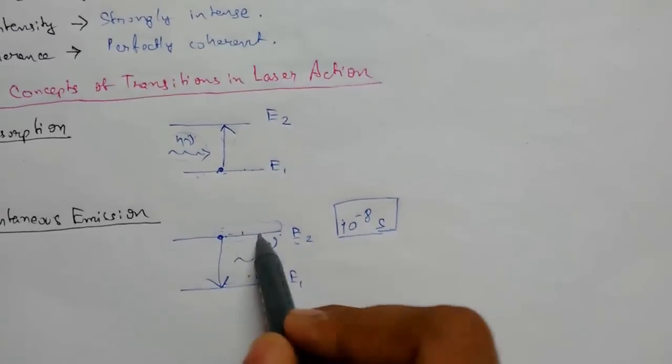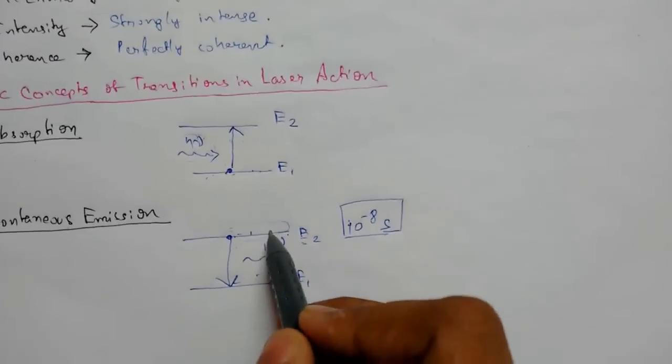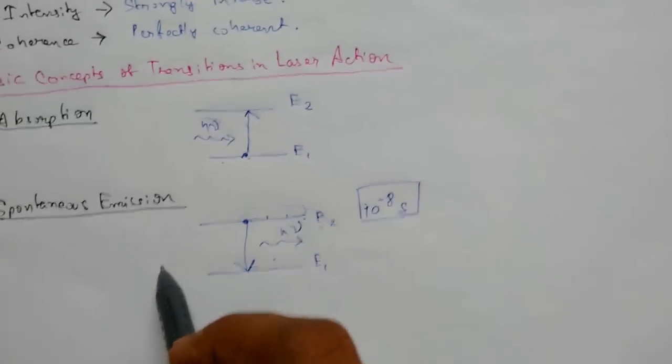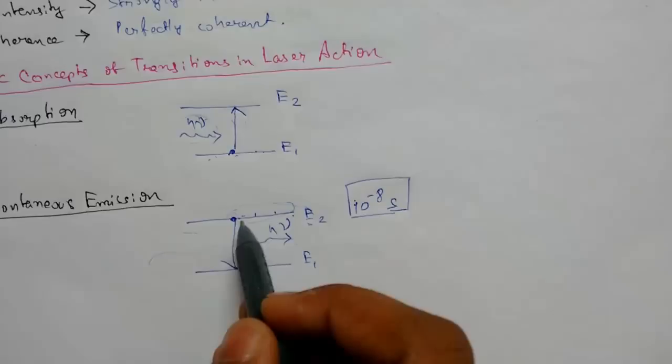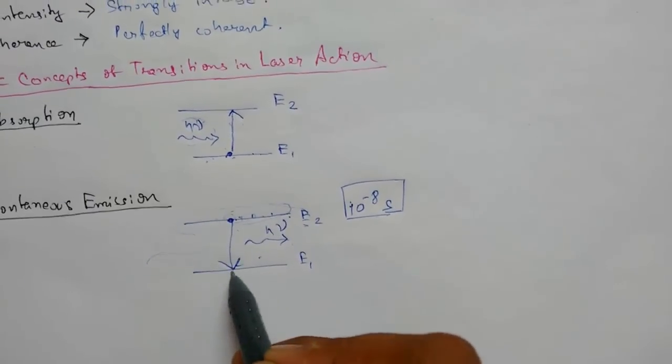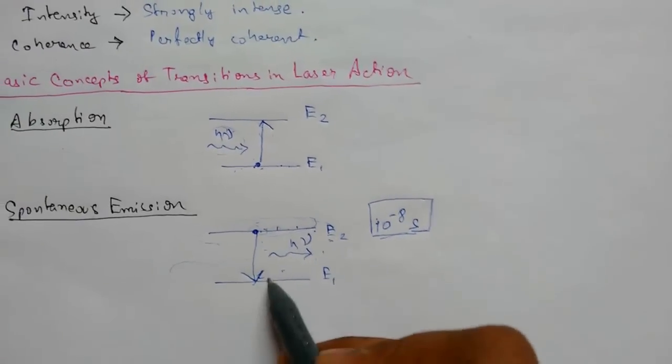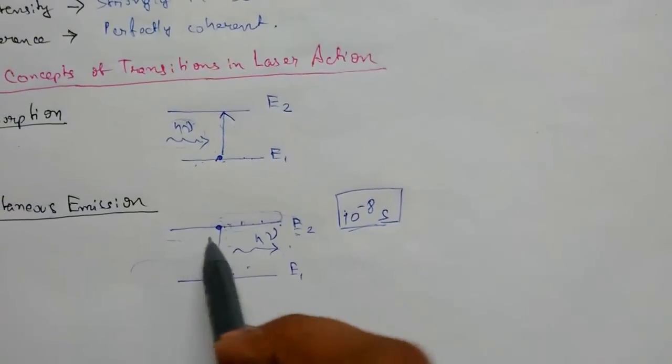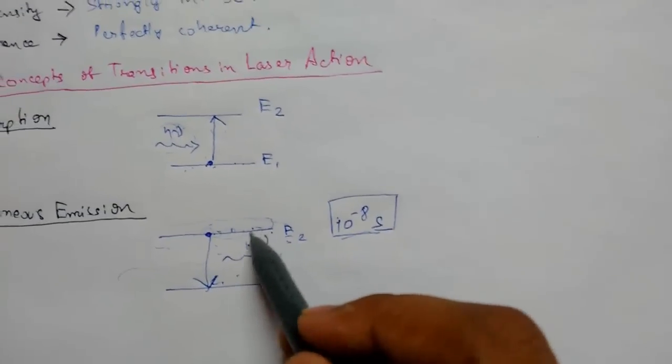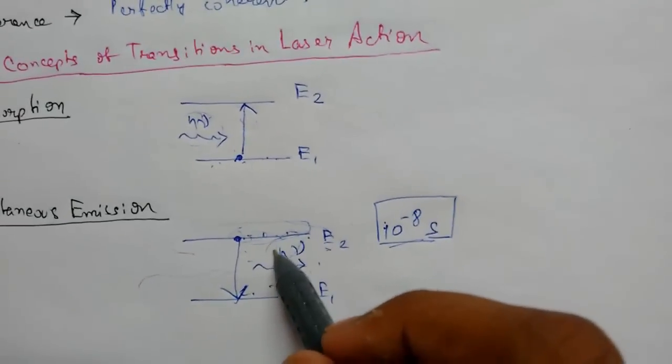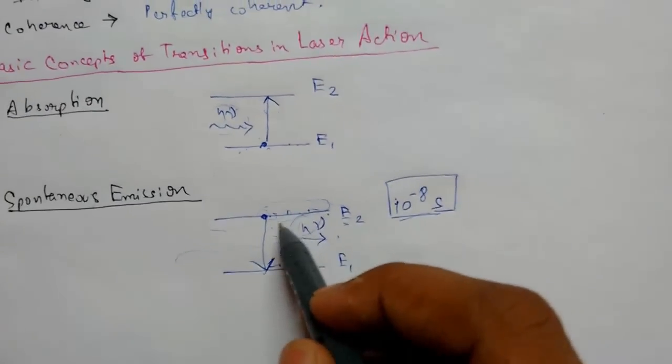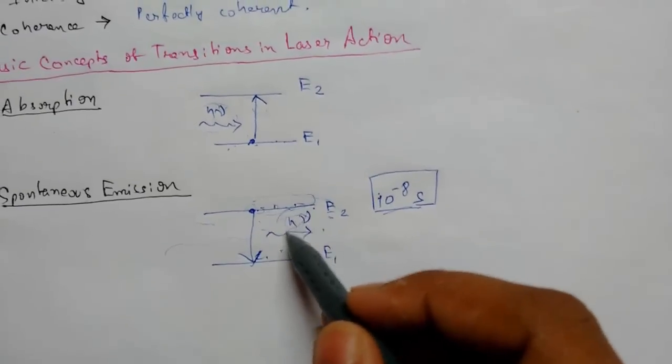It is independent of the incident light because emission occurs after the lifetime expires. The emitted light in spontaneous emission is incoherent as there is a definite phase relationship or difference among the emitted light.